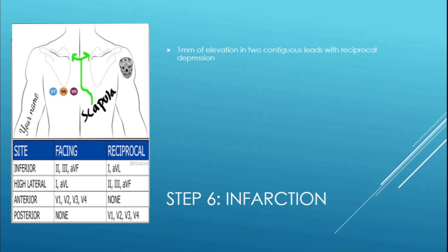Step six: infarction. Infarction is pretty simple to see on a 12-lead, so it's so simple we shouldn't really pat ourselves on the back for seeing it. All that means is you need one millimeter of elevation in two contiguous leads with reciprocal depression. For example, if you have one millimeter of elevation in leads 2, 3, and AVF and you have depression in lead 1 or AVL, you can call it a STEMI.